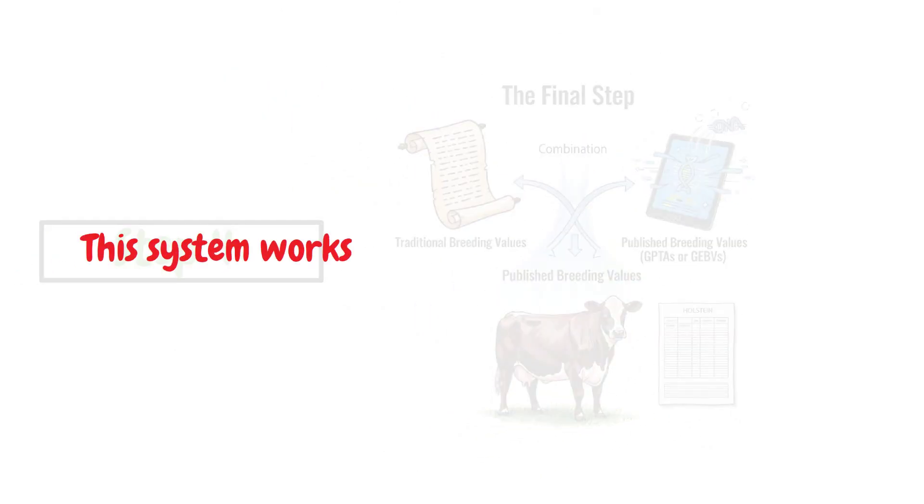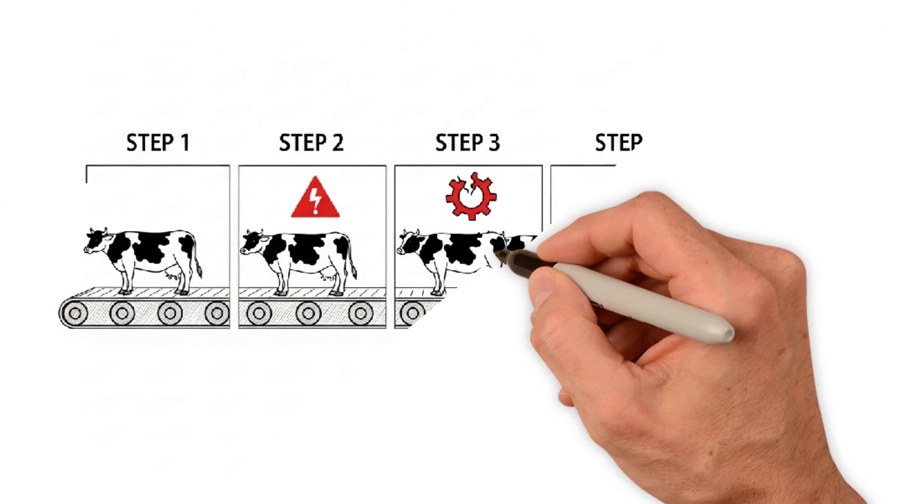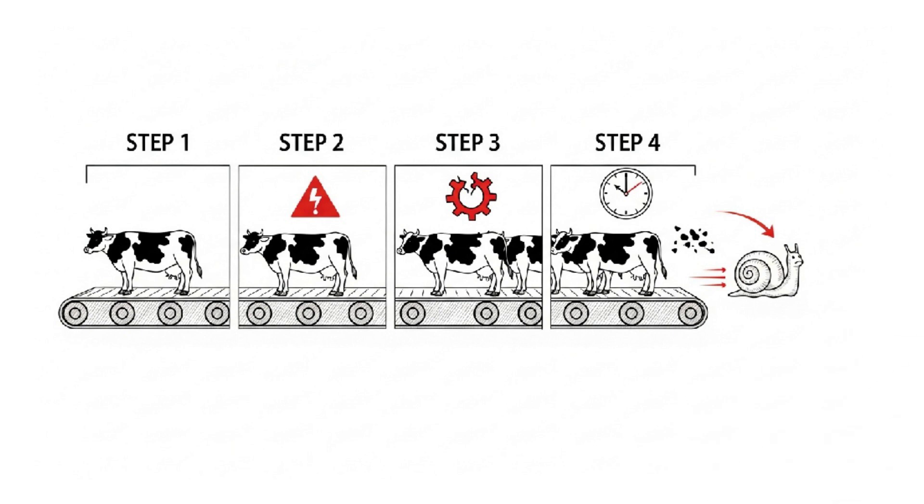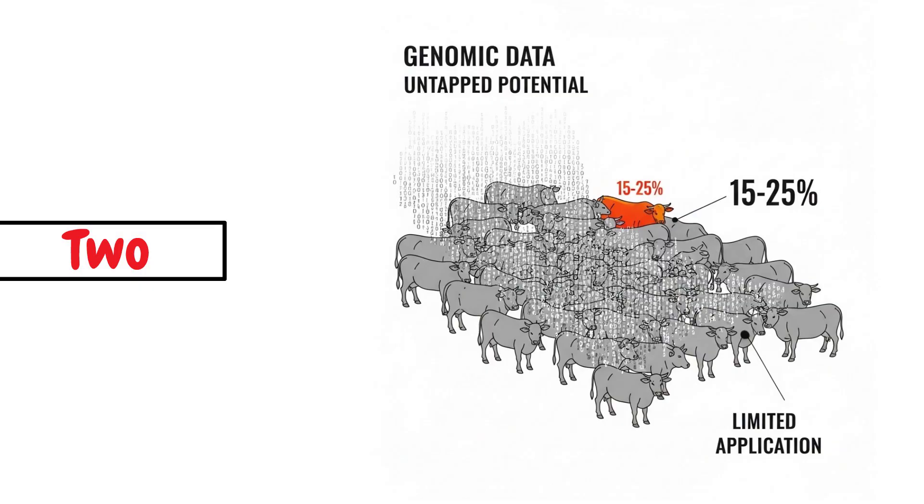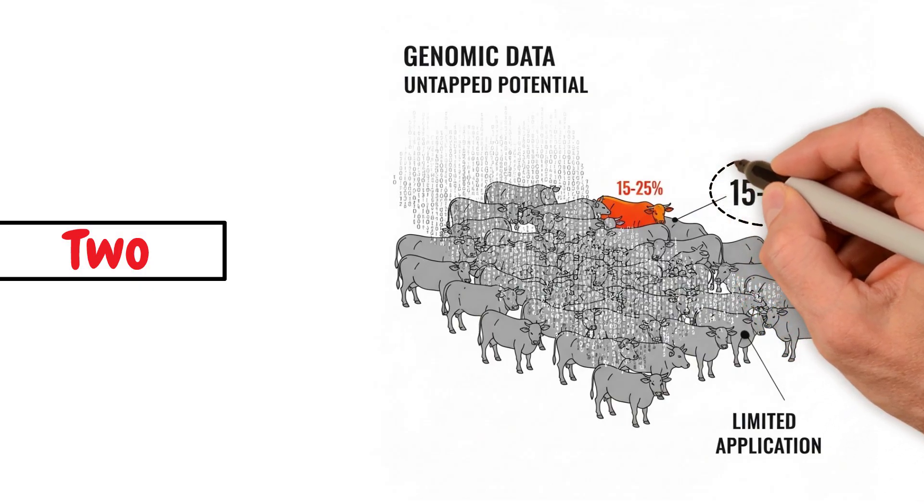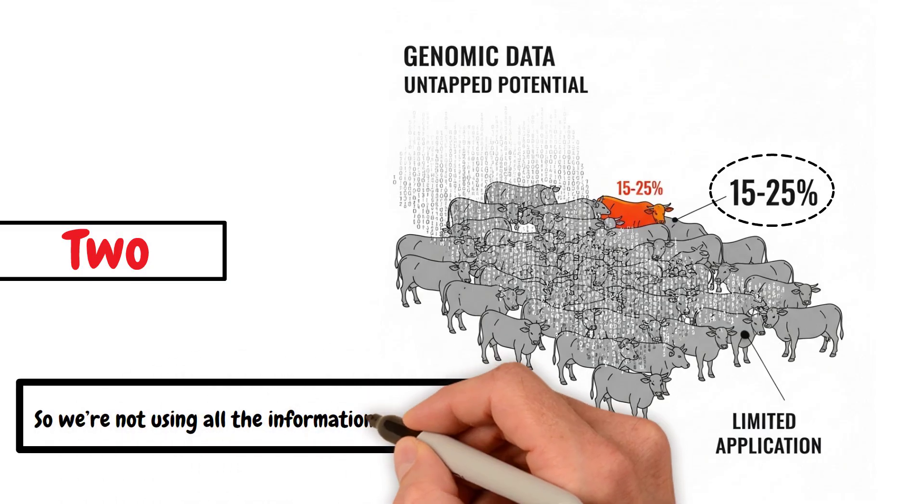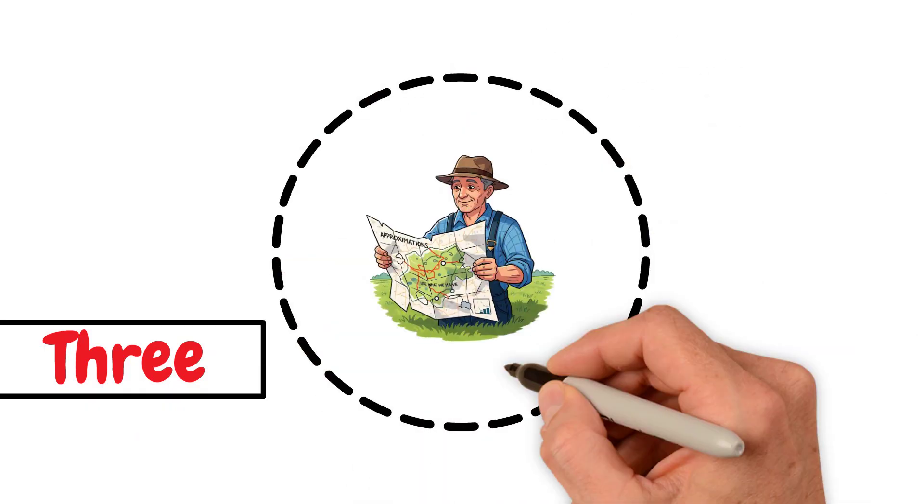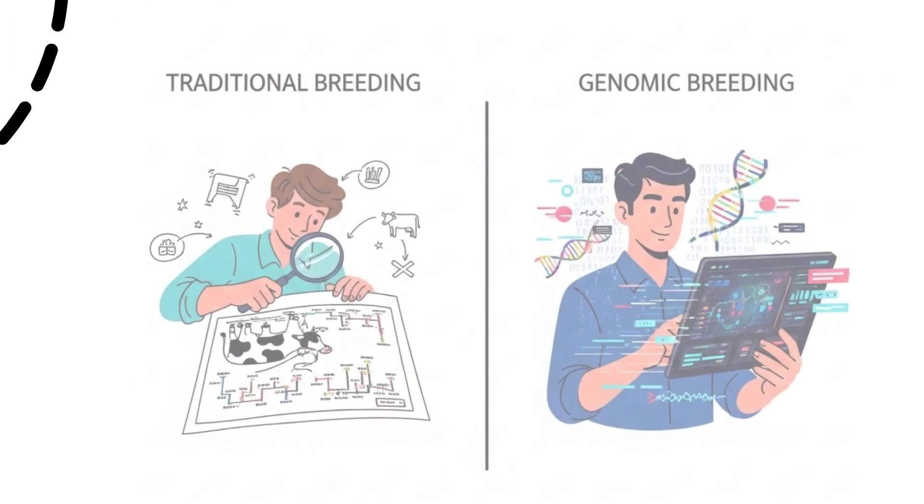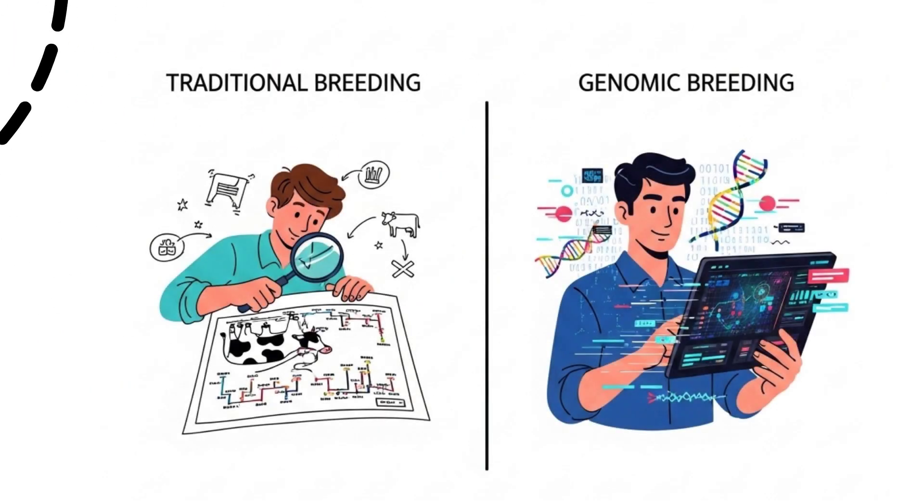This system works well, but it has some limitations. For one, it's complex. Multiple steps can introduce errors and slow things down. 2. It's limited. Only genotyped animals benefit from the genomic data. Only a small percentage of animals are genotyped, so we're not using all the information we could. 3. It's based on approximations. The genomic era has taught us that the assumptions made in the traditional model are not completely correct.